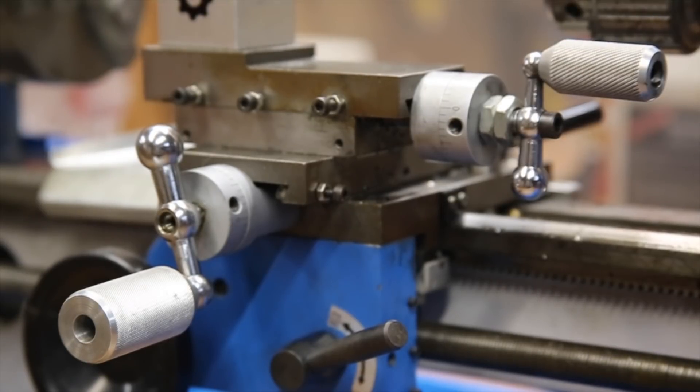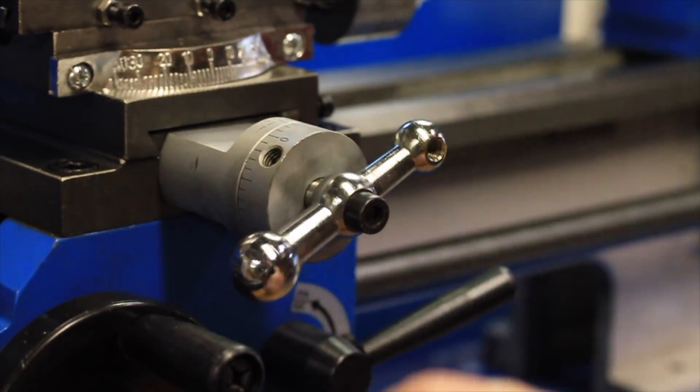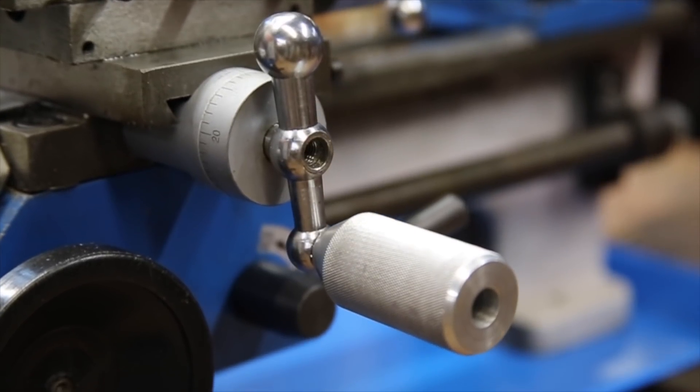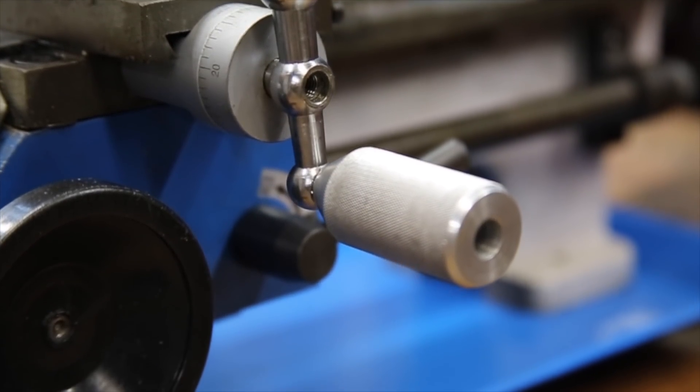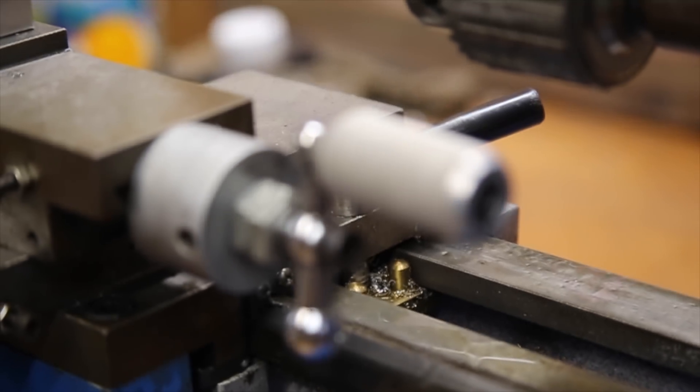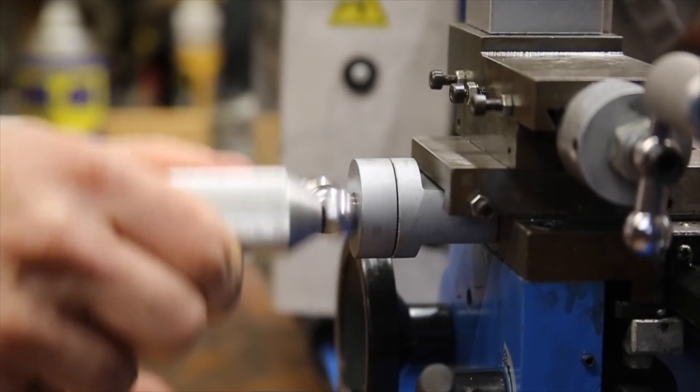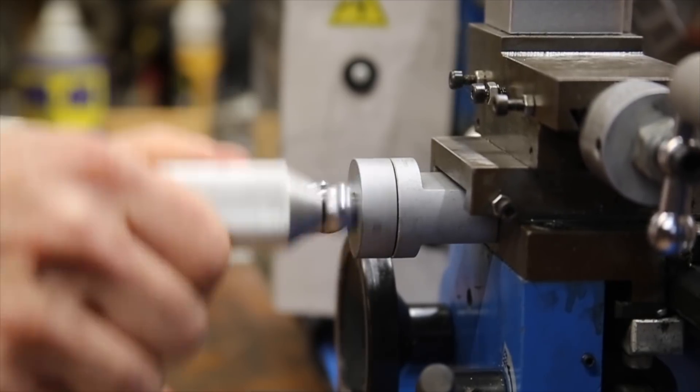The first upgrade on the list was also one of my first projects, the knurled handles for the compound and cross slides. I knew pretty early I wasn't going to like the handles that came with it, and these handles needed quite a variety of different operations that gave me good experience yet were simple enough to complete as an early project. They also made this list because I use them every time I use this lathe, and they've worked really nicely.